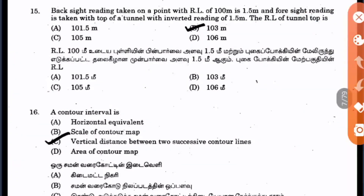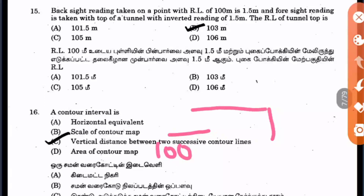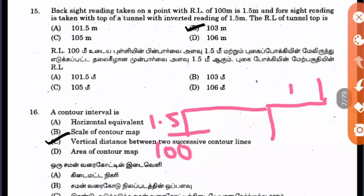Question 15: The backsight reading taken on a point with RL 100 is 1.5 meters. So we fix a point with RL of 100 and the backsight reading is 1.5 meters. The foresight reading is taken on top of a tunnel with an inverted reading of 1.5 meters — meaning from that point it is taken as 1.5 meters.